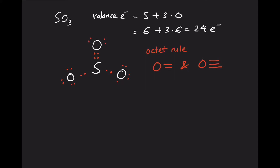Counting all of the electrons in the structure gives us a total of 24, confirming that we have correctly distributed all valence electrons.